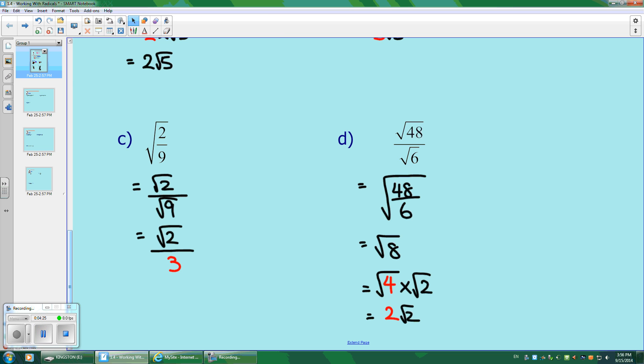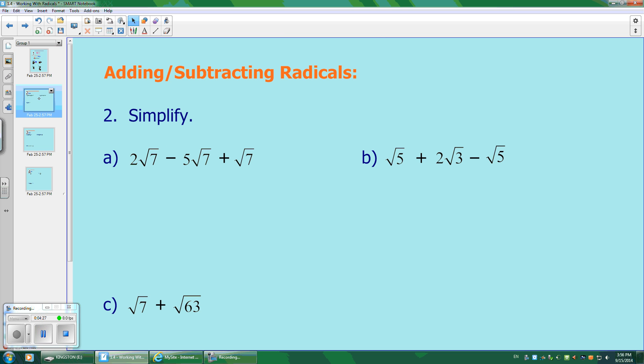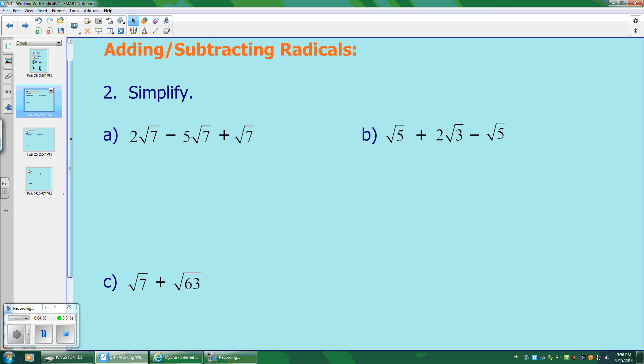Now, let's take a look at some questions for addition and subtraction. The way that you add and subtract radicals is very much like how you add and subtract polynomials. When all of the roots are the same, you can add them together or subtract them. It's almost like saying 2x minus 5x plus 1x. So 2 minus 5 is negative 3, plus another 1 is negative 2 root 7s.